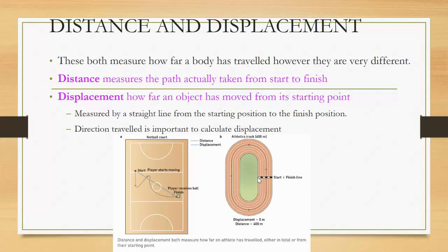Now let's look at the concepts of distance and displacement, best explained using a 400-meter track. Distance measures the entire path actually taken from start to finish — the total path an athlete takes around the athletics track. Displacement is simply how far an object has moved from the starting point to the ending point. If an athlete starts and finishes at the same point, their displacement is zero, whereas their distance is 400 meters — the total path traveled around the track.